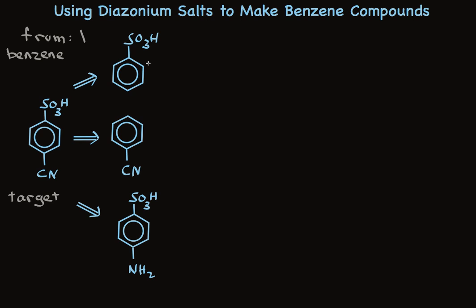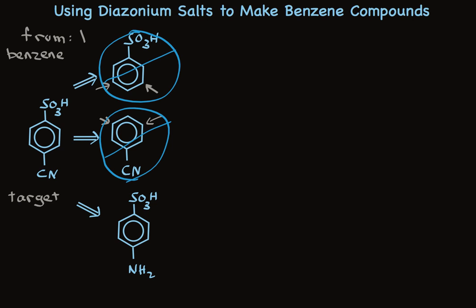Using benzene sulfonic acid as a precursor has two problems: first, it's a meta-director, so substituents go to the meta position, not the para position we want. In addition, we don't know any chemistry that attaches the cyano group directly to the ring, so we can rule this one out. For the precursor with only the cyano group, we do know how to put the SO3H group on the ring, but the cyano group is a meta-director, so we must rule out that precursor too. Fortunately, we know chemistry that transforms the NH2 group to the cyano group, so the NH2-containing precursor is reasonable.